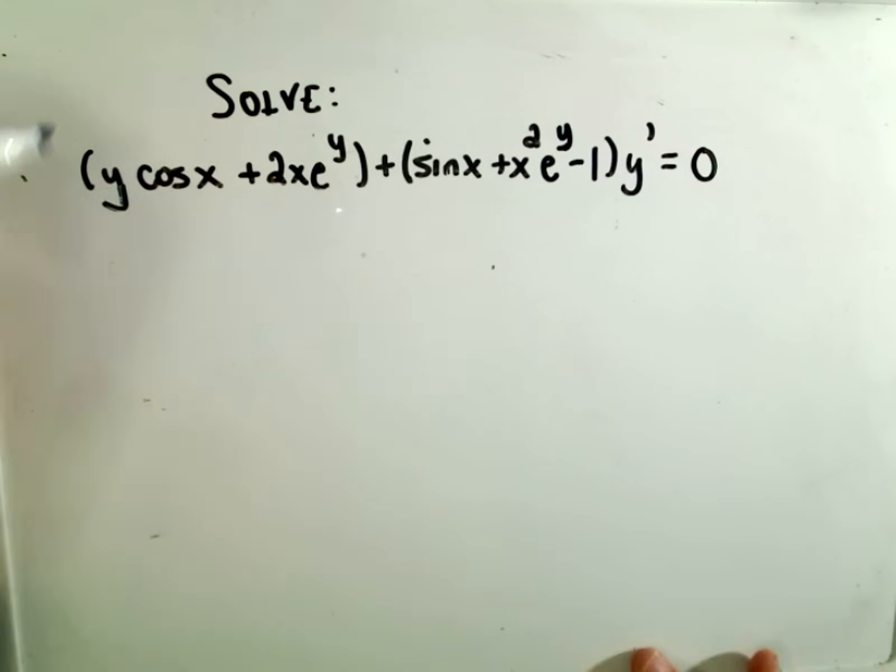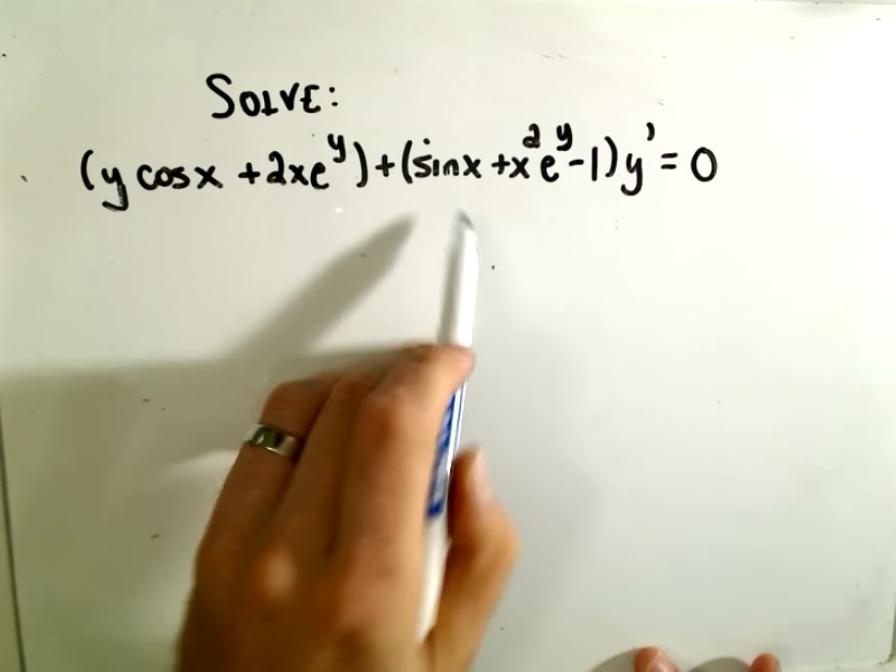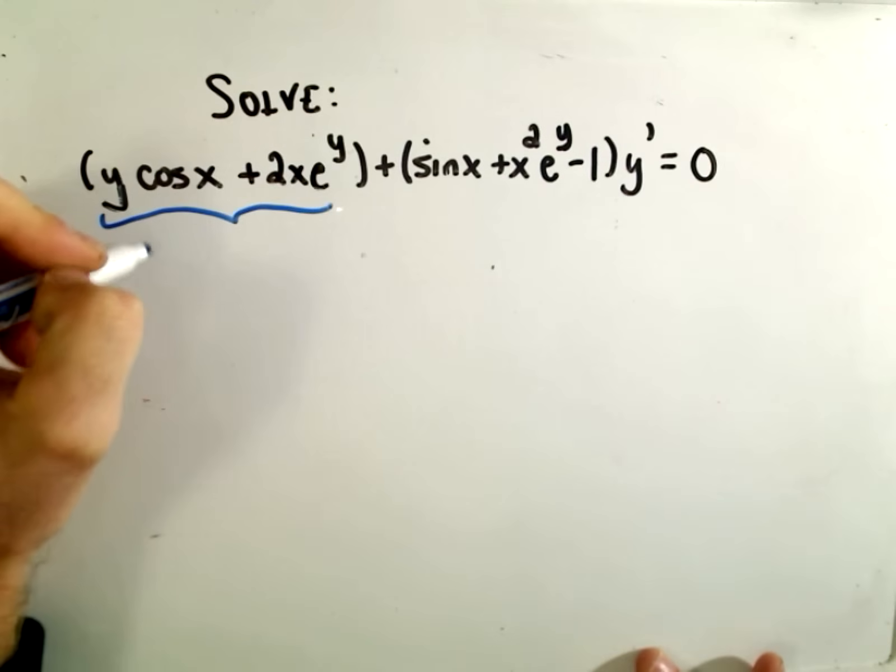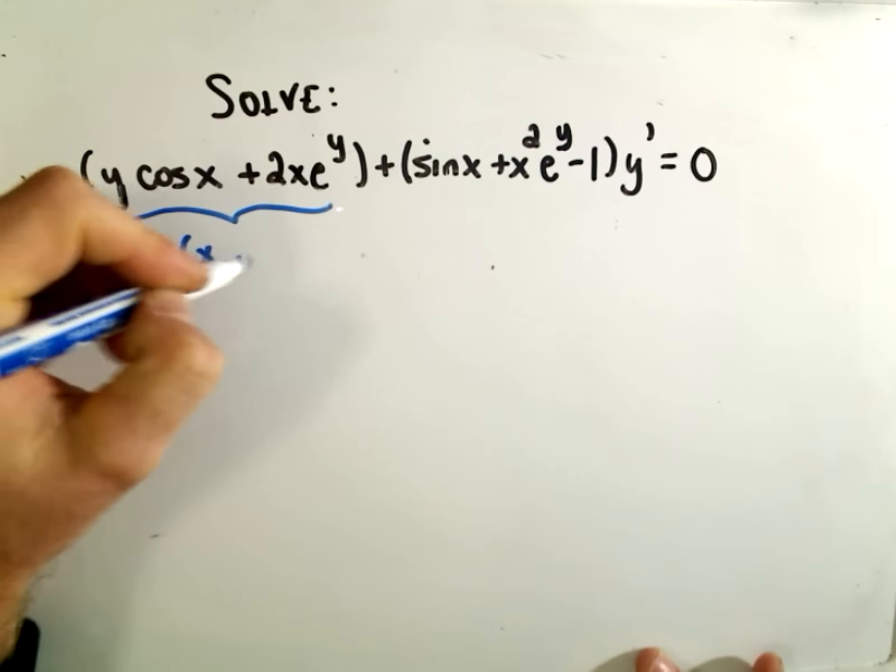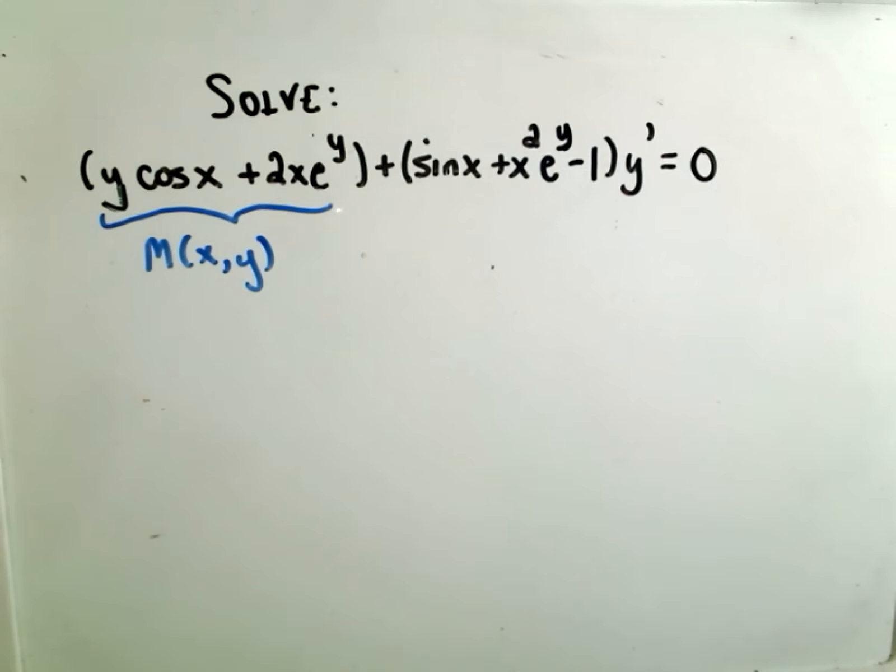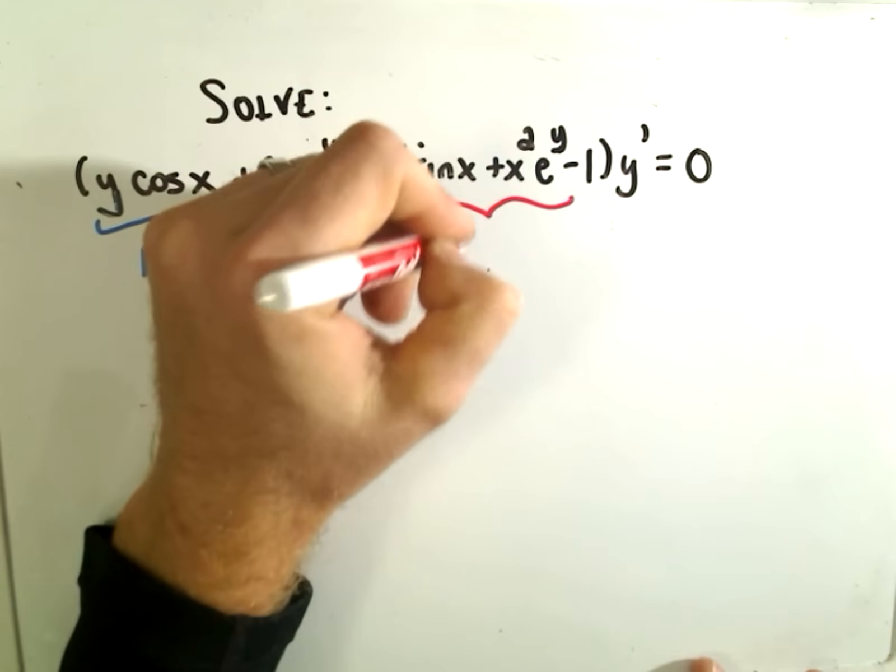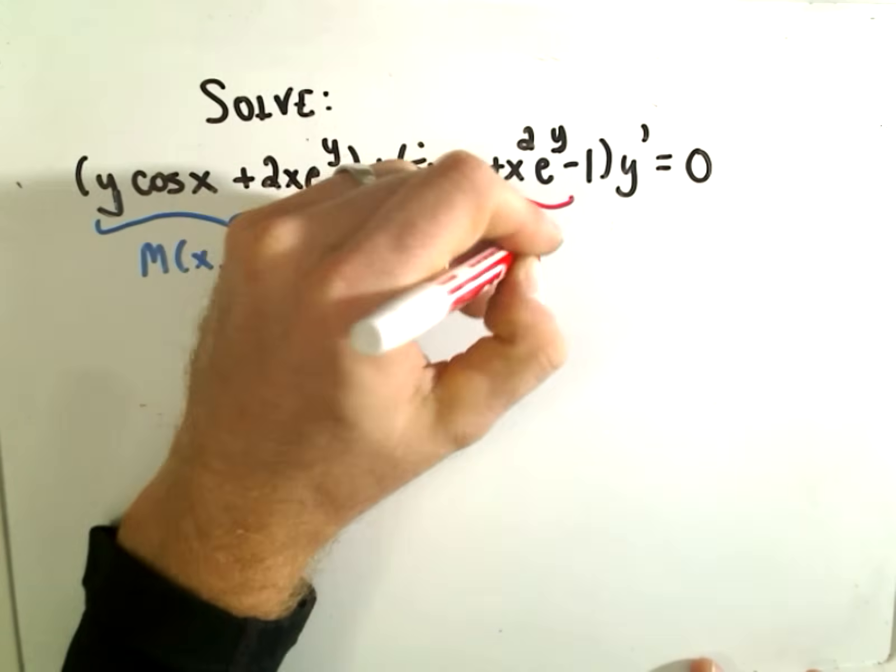so the first part, here we have y cosine x plus 2x e to the y plus sine x plus x squared e to the y minus 1 y prime. So the first part is our function, M of x,y. And our other function, there's our N of x,y. And, you know, everything's written in a nice form here.